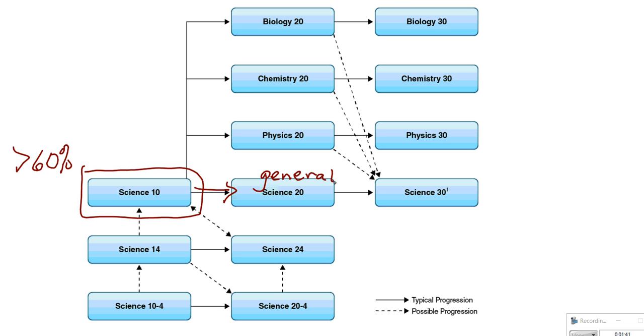Another path is to take any or all of the specialized sciences at the 20 level, which include chemistry, biology, and physics.